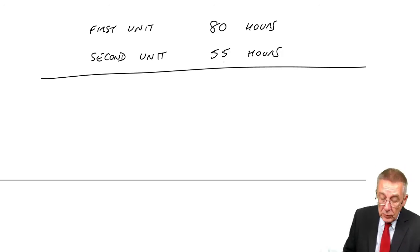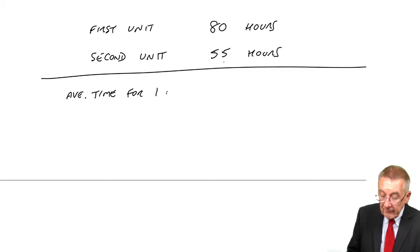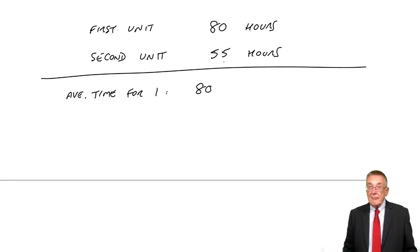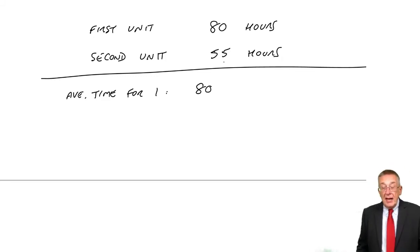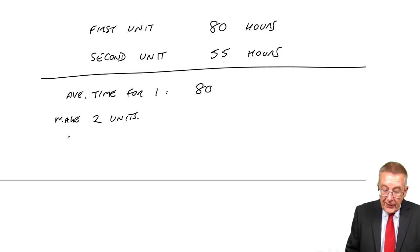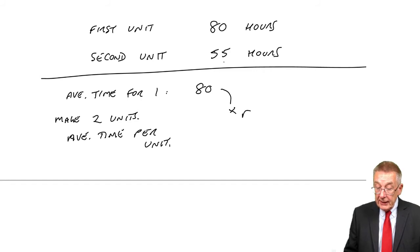Remember how the learning rule works. The average time for one unit - well, one unit takes 80 hours. The average time is 80. If we double up and make two units, then the average time per unit will be 80 times the learning rate.